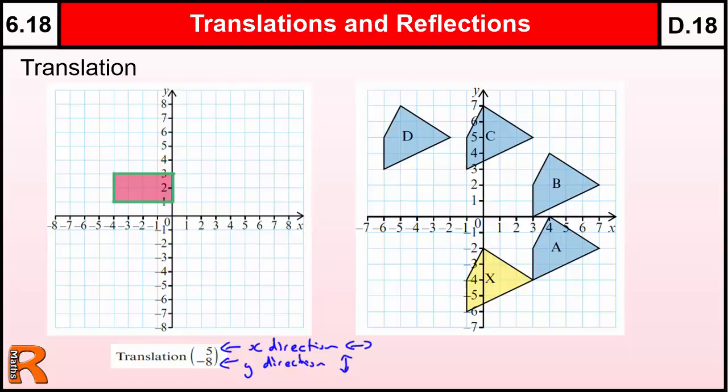Now we're told to translate this shape at 5 minus 8, so we need to go 5 to the right, so the top direction, positive 5. So if we take 1, 2, 3, 4, 5 to the right, and then minus 8 in the y-direction would be down 8, so 1, 2, 3, 4, 5, 6, 7, 8. Now you could do that with a piece of tracing paper.